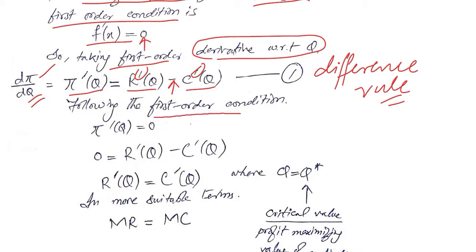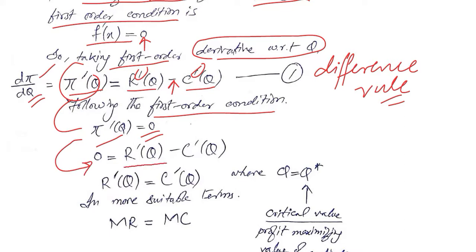We apply the first order condition, which requires us to set the first order derivative equal to zero. So instead of writing π'(Q) we write zero, while the right hand side remains the same. We can then shift C'(Q) to the other side, making it positive.